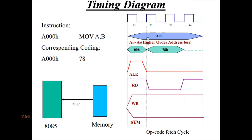The time slots are T1, T2, T3, T4. These are four time slots. The data on address line A0 is shown across these time slots.